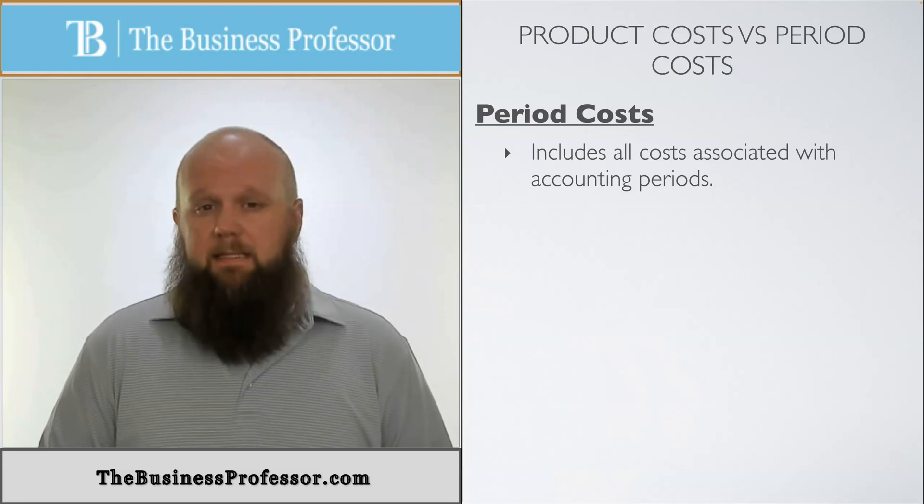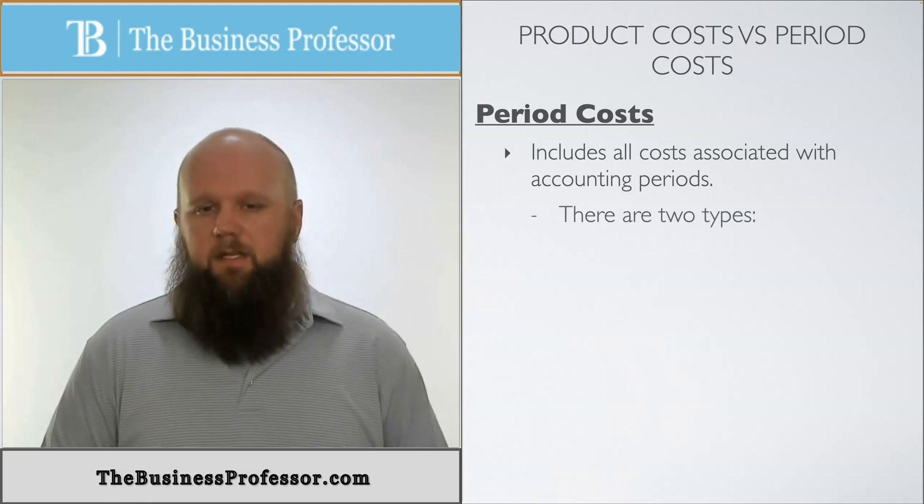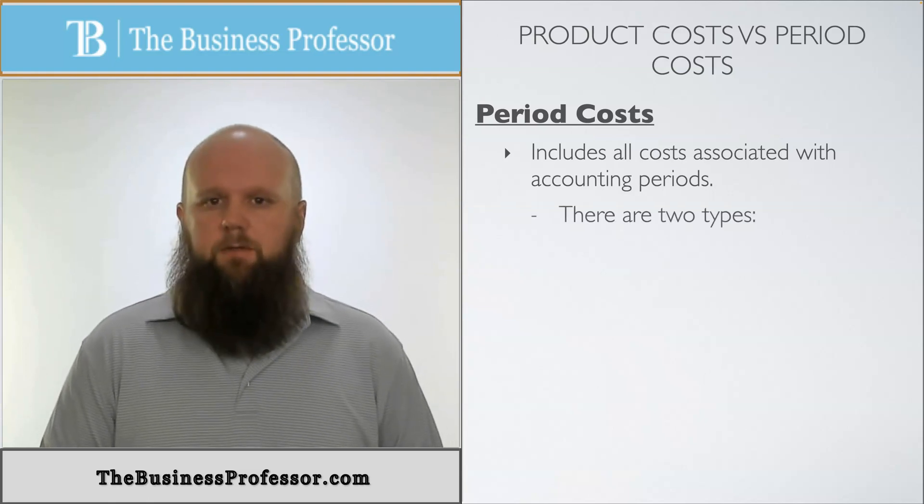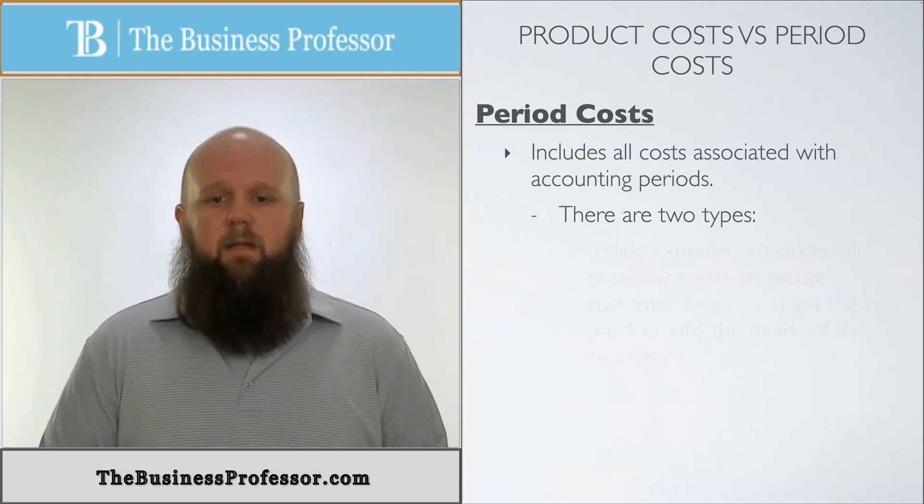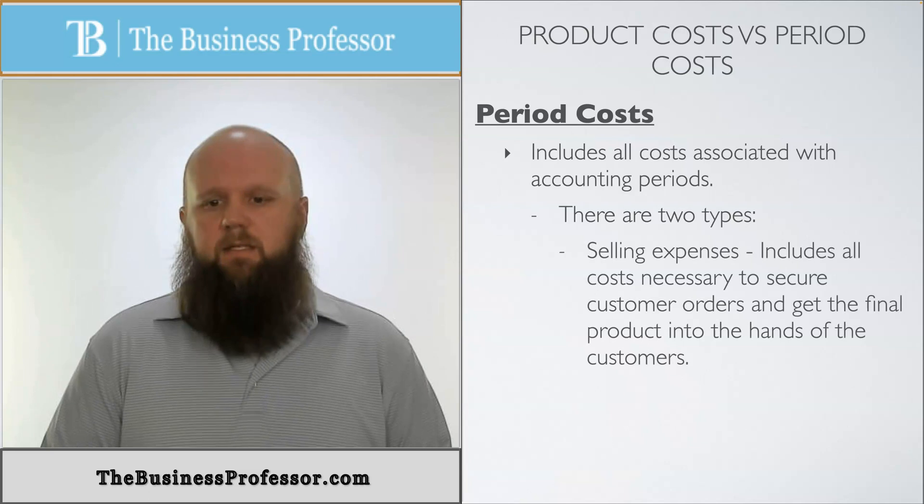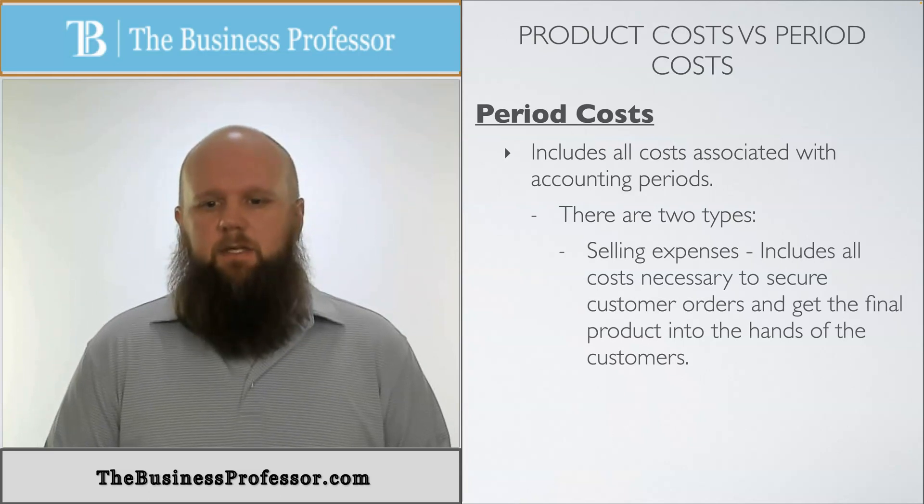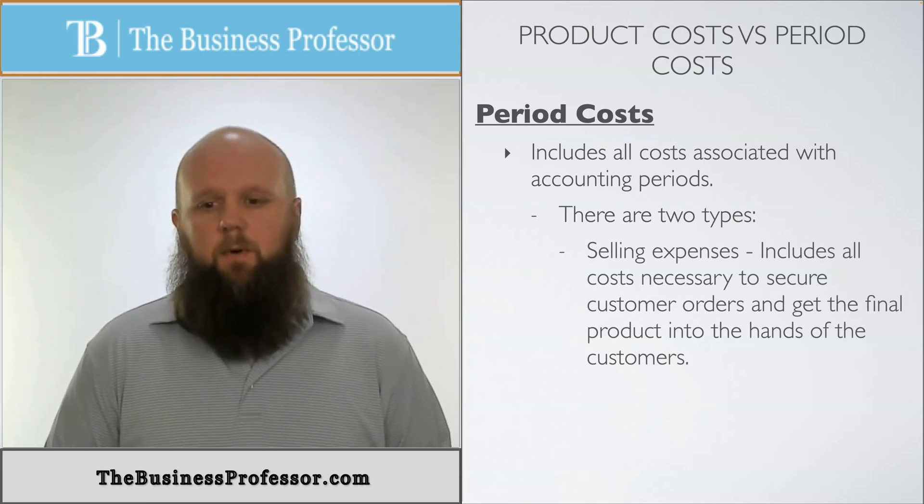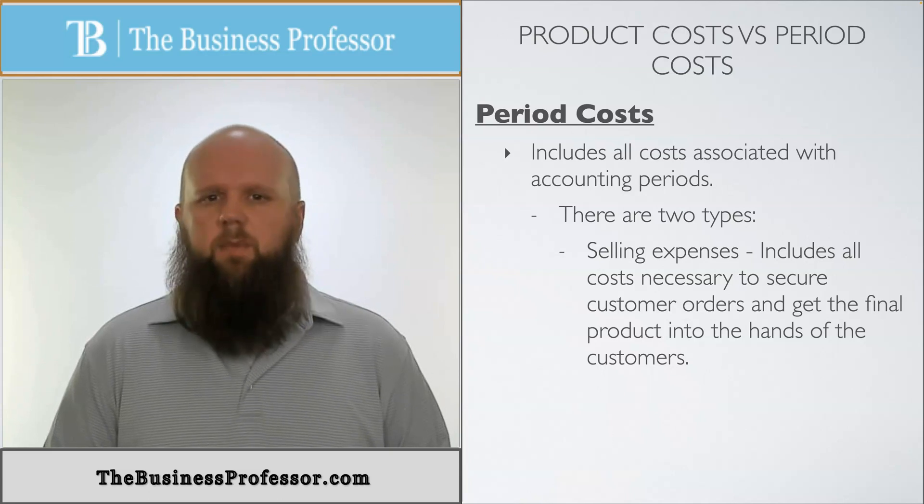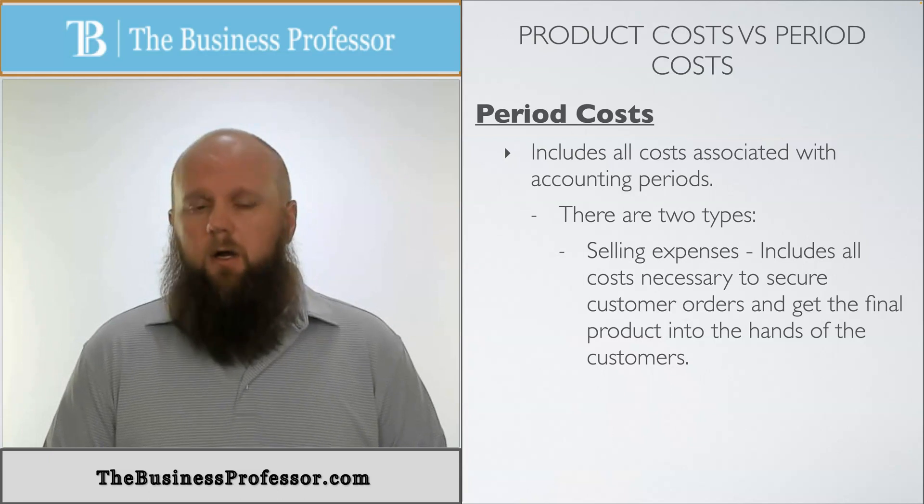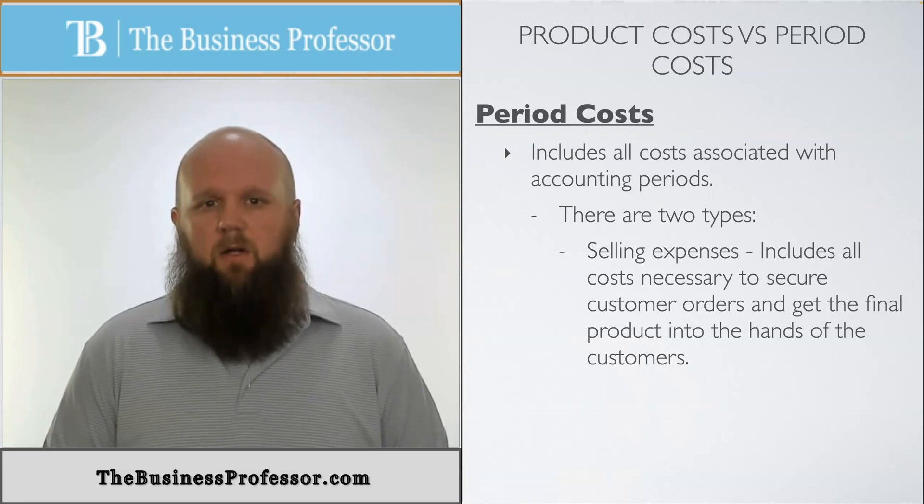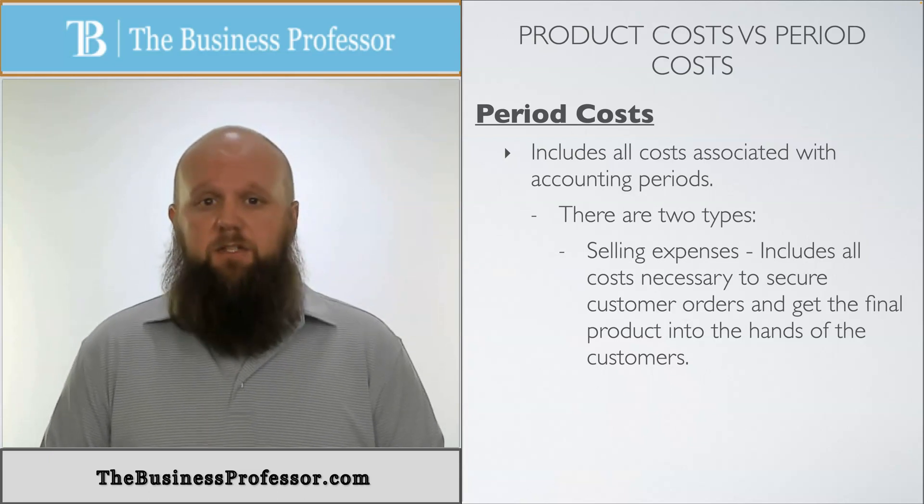Now we can break these down into two categories. The naming of these two categories can be a little different depending on who's teaching your class or what book you're reading. But for the basics, we look at it as one being the selling expenses. This includes all the costs necessary to secure customer orders and get the final product into the hands of the customers. So this would be like the salaries of your sales agent or the commission of your sales agent, maybe the cost of the sales agent's car. These would all fall into selling because it all deals with selling the product finished good.